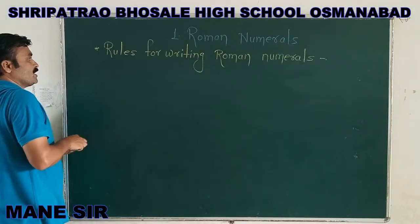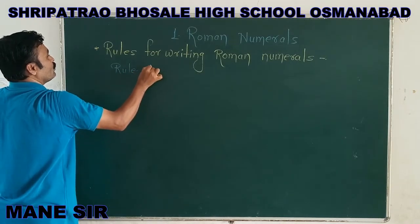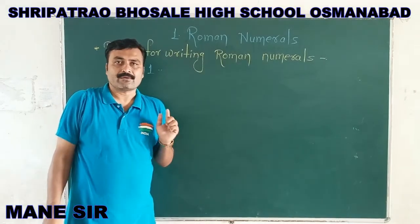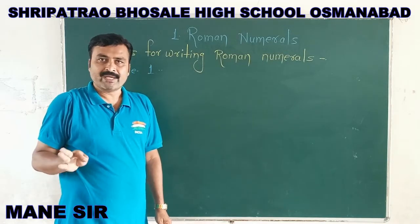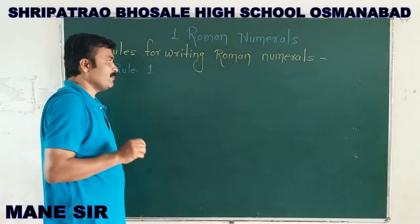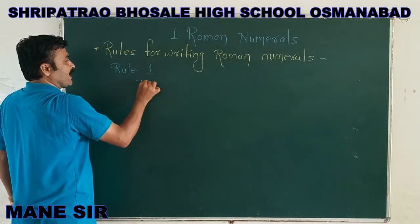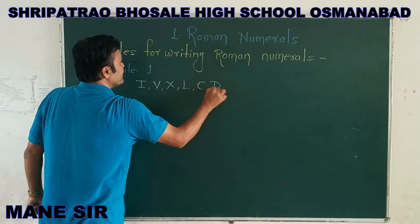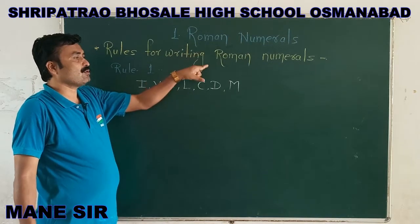Here I am putting Rule Number 1 in front of you. The rule is stated this way: we can write Roman numerals a maximum of 3 times continuously. Let's keep in mind, we have 7 basic Roman numerals — capital I, then V, then X, then L, then C, then D, and then M. These are the 7 basic numerals that we use for writing Roman numbers.